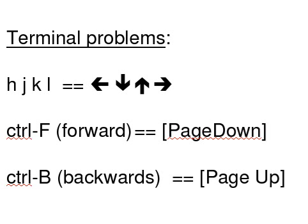VI is an old editor, and at the time it was designed, the arrow keys and page up/page down were not standardized. So you also have an alternative way to move, which may be useful if you are connected to a system and have terminal problems. With the H, J, K, L keys you can move left, down, up, and right. You can also use Ctrl+F or Ctrl+B as an alternate way to do page down or page up.